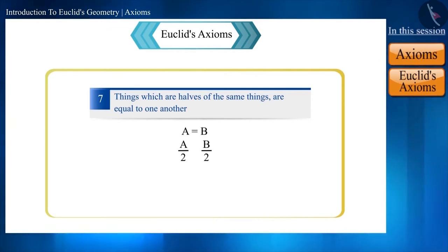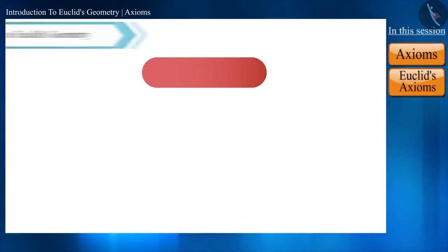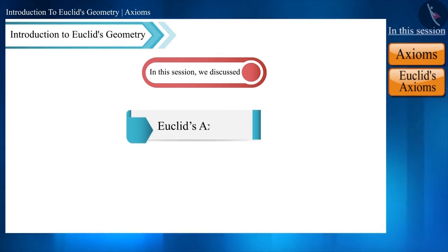That is, if a and b are equal, then half of a (that is a by 2) and half of b (that is b by 2) will also be equal. So friends, that's all in this session. Today we discussed some of the axioms written by Euclid. See you in the next video.